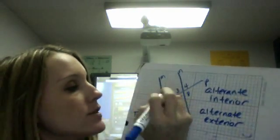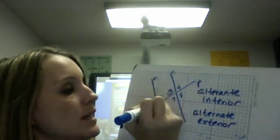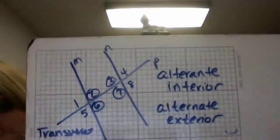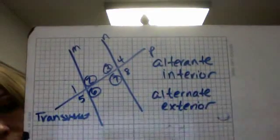So when I'm looking for interior angles, interior angles 2, 3, 6, and 7, they're on the inside of the two lines that are cut by the transversal.